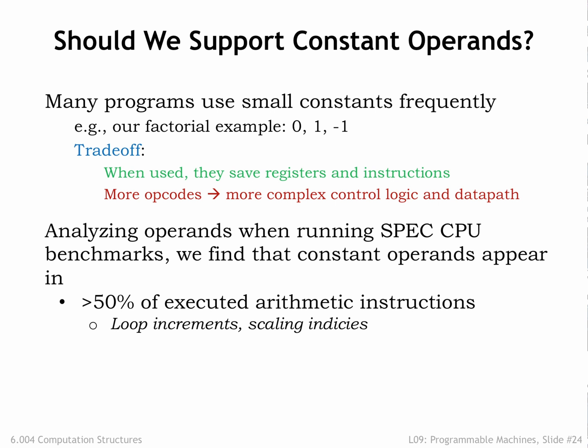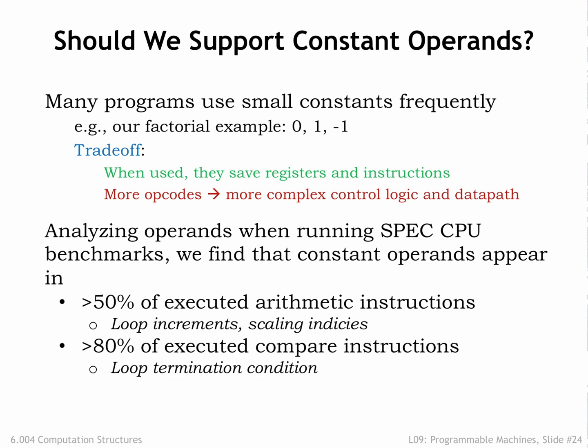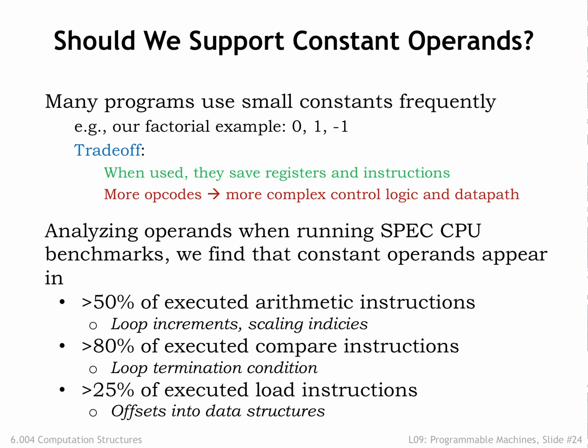Looking at the results, we see that over half of the arithmetic instructions have a small constant as their second operand. Comparisons involve small constants 80% of the time, probably reflecting that comparisons are used to determine whether we've reached the end of a loop. Small constants are also often found in address calculations done by load and store operations. Operations involving constant operands are clearly a common case, well worth optimizing. Adding support for small constant operands to the ISA resulted in programs that were measurably smaller and faster.